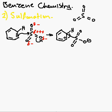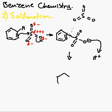What happens first is this hydrogen then leaves, which creates an H+. We'll assume this has gone like that, and we're all back to the double bond being there. That will now attack the hydrogen ion, which creates a Kekulé structure that's been sulfonated.